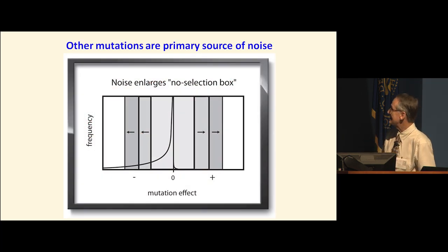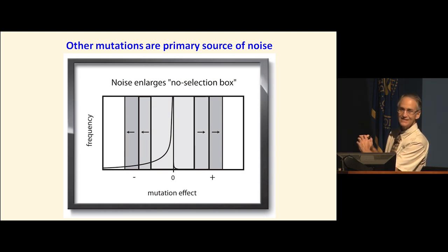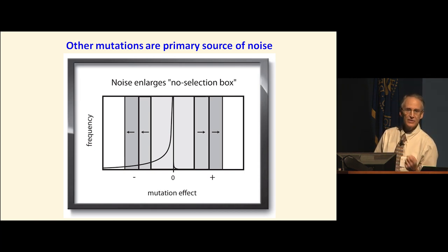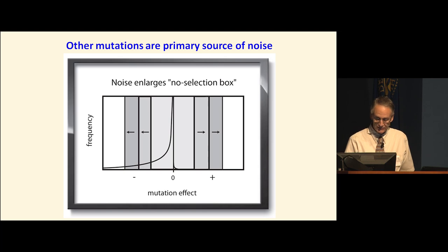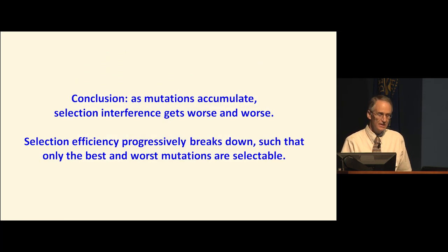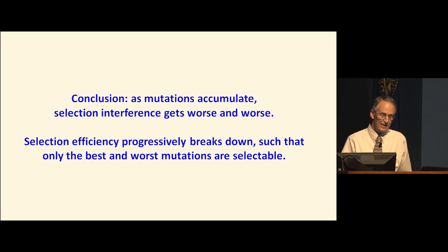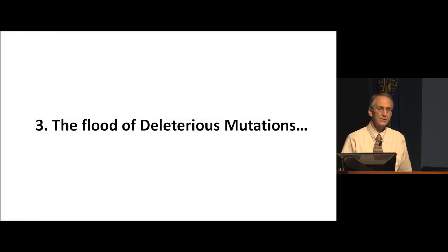If you have too many mutations, good and bad, everything cancels out and you have a huge no-selection zone. The conclusion in terms of this problem is that as mutations accumulate, selection interference gets worse and worse. Selection efficiency progressively breaks down such that only the best and the worst mutations are selectable.